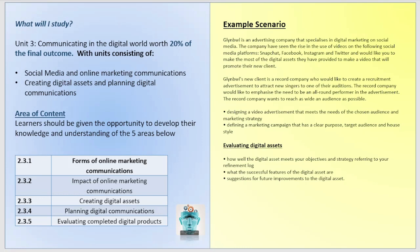Here's an example from WJC. Glimbool is an advertising company that specialises in digital marketing on social media. The company has seen a rise in the use of videos on Snapchat, Facebook, Instagram, and Twitter, and would like you to use the digital assets provided to make a video promoting their new client — a record company that wants to create a recruitment advertisement to attract new singers to auditions, emphasising the need to be an all-round performer, and reaching as wide an audience as possible.